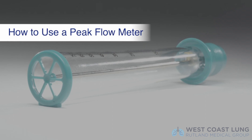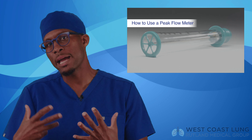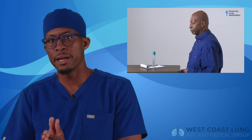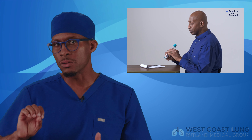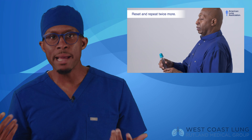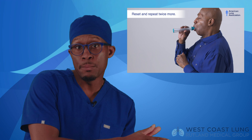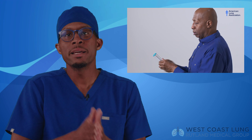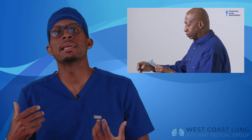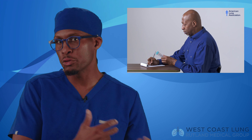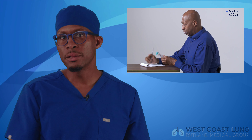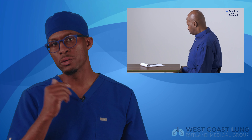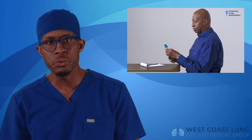Along these same lines, there is an object called a peak flow meter. This is a small handheld pocket device that measures your ability to blow air out. In asthmatics and in people with chronic bronchitis or emphysema, this device can let us know if you are beginning to have an exacerbation. The device quantifies how well your lungs are working in real time, and it's easy to use.